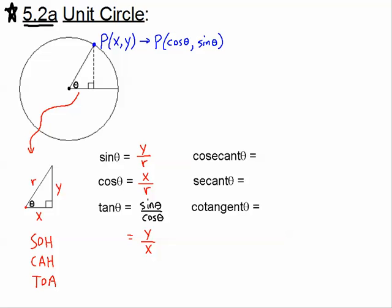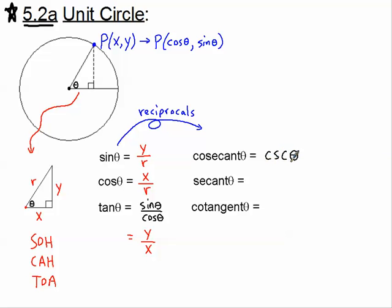Those are the three trig ratios from geometry, and these three ratios have reciprocals. Some of you may have learned these in an advanced functions class, but if not, let me show you. The sine has a reciprocal called the cosecant of theta. The three-letter symbol is CSC for cosecant. The cosecant is exactly the reciprocal of the sine, which in this case would be r divided by y — you just flip the fraction.